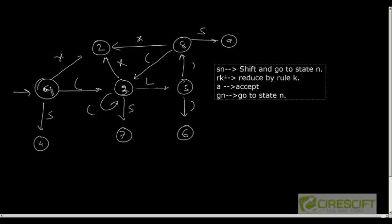So Gn will be used for the goto table. Since we are combiningly creating the LR parse table, we use this notation.